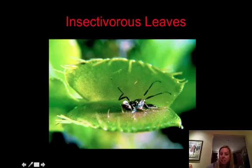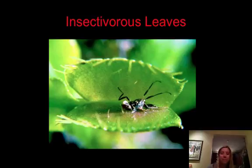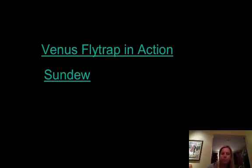Then you've got insectivorous leaves, and those are going to be like a Venus fly trap that actually eats different things. That is a result of having low nutrients in the soil. Here's a Venus fly trap doing its thing — you can see an insect getting eaten by it.